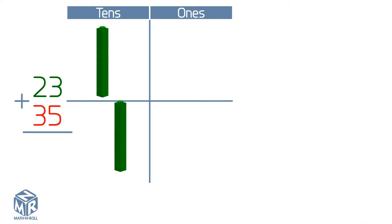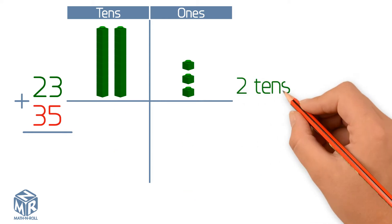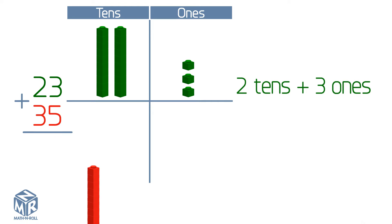23 has two tens and three ones. 35 has three tens and five ones.